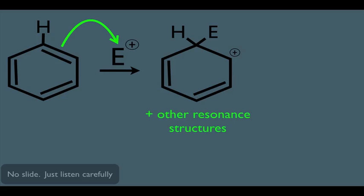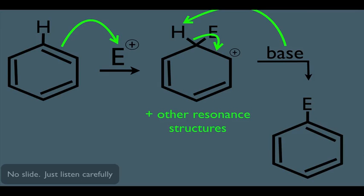We also learned that this reaction is finished off by adding a base, and what the base does is grab off this hydrogen right here. The electrons in the bond fall between these two carbons, recreating the double bond and recreating the aromatic ring, and in the process, adding the electrophile to the benzene ring. This is just simply electrophilic aromatic substitution.